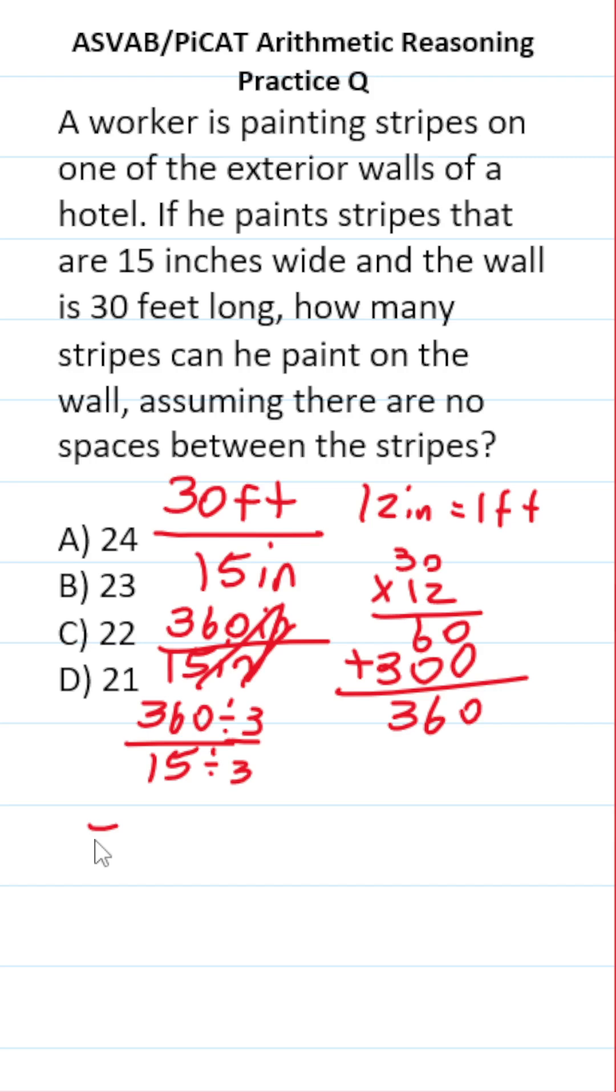15 divided by 3 is 5, of course. 36 divided by 3 is pretty easy to do mentally. 3 goes into 3 one time, 3 goes into 6 two times, and again, just bring down that 0.